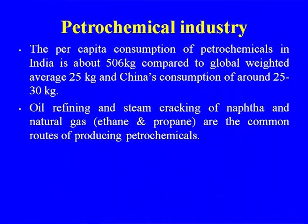Oil refining and steam cracking of naphtha and natural gas are the common routes for producing petrochemicals. Various plastics produced include low density polyethylene (LDPE), high density polyethylene (HDPE), linear low density polyethylene (LLDPE), polypropylene, PVC, polystyrene, and specialty polymers such as acrylonitrile-butadiene-styrene (ABS).